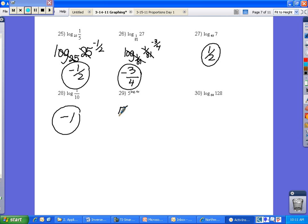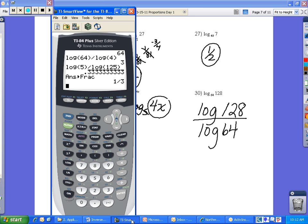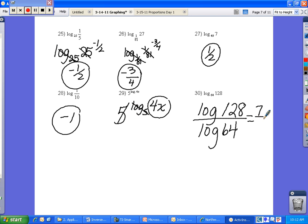For 29, this one you do actually have to know that 5 and log base 5 cancel. So if you have 5 to the power of a log base 5, those two will cancel, and you're just left with 4x. This last one is really hard. This one you actually get 7/6ths. So I would encourage you to use the change of base for ones like this, where if you're just really having a hard time figuring it out, use your change of base and put in log of 128, divided by the log of 64, hit enter, and then turn your answer into a fraction. And you'll see that you get the 7/6ths.